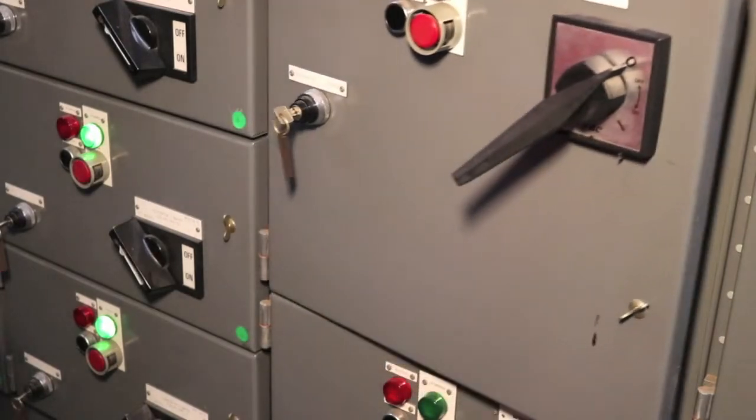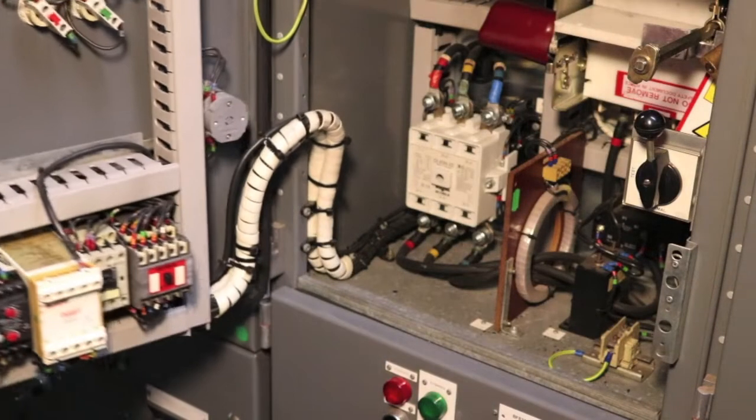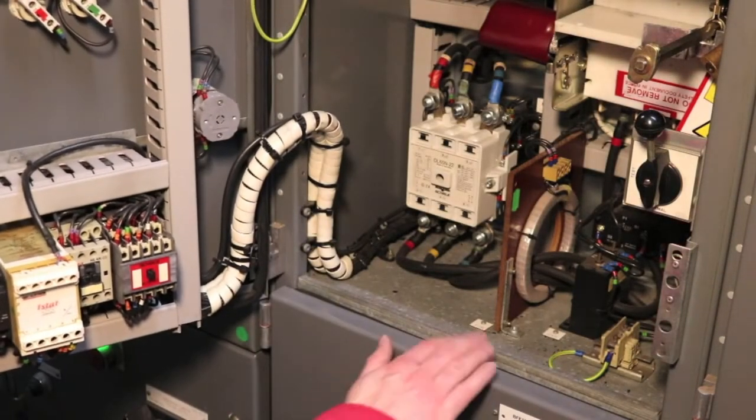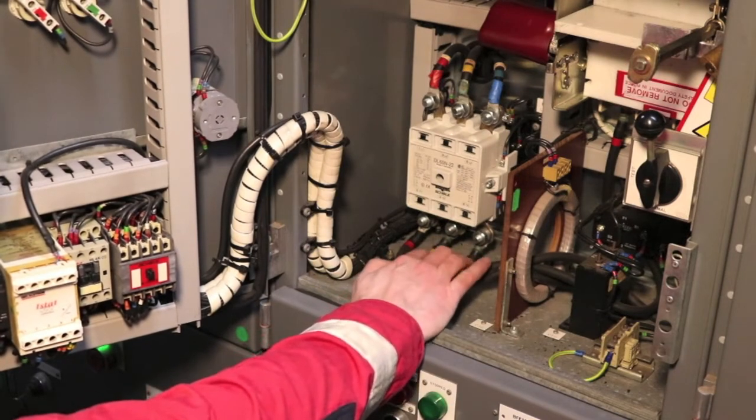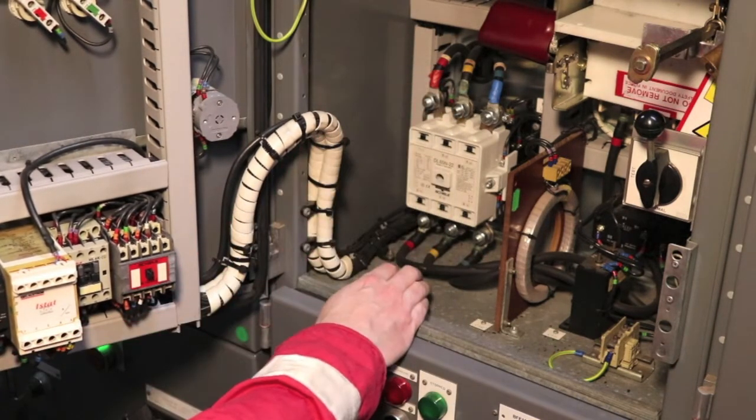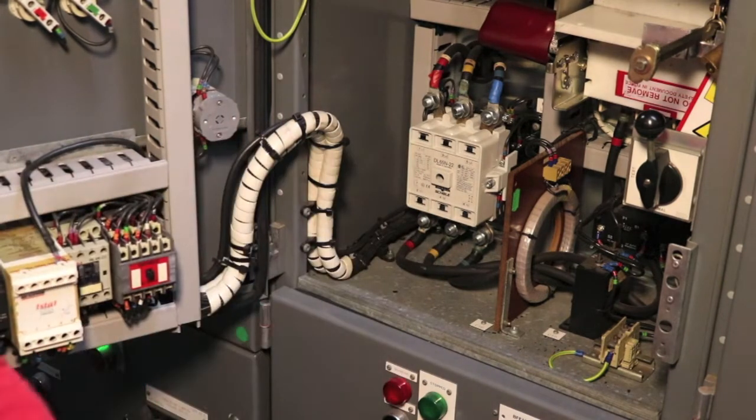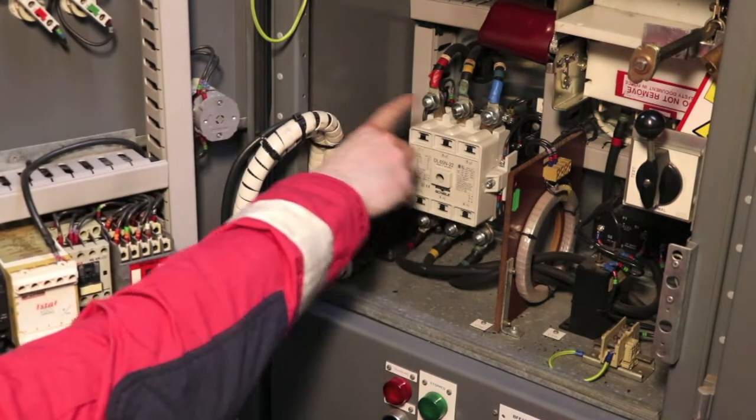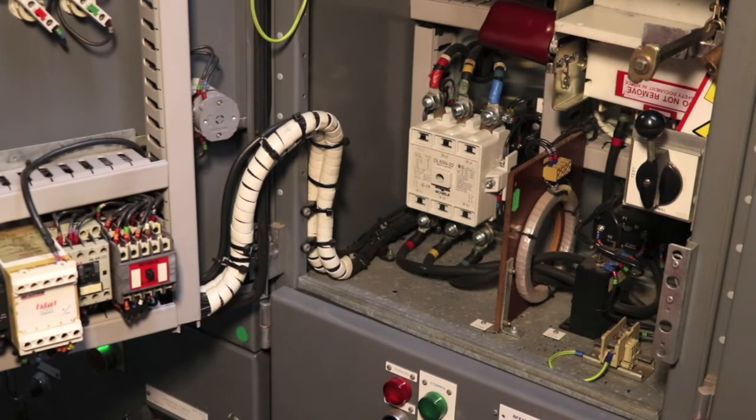This is the 45 kilowatt motor starter cubicle and inside we've got the mains that comes in on the right hand side to the bottom of the contactor and the motor terminal is going out at the top. All the electrical tests have been done at these terminals at the top of the contactor going out to the motor.